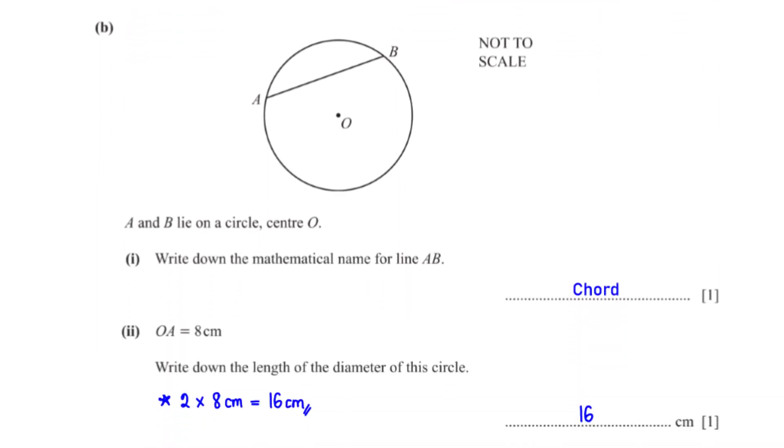A and B lie on a circle, center O. Write down the mathematical name for line AB. Line AB is a chord.